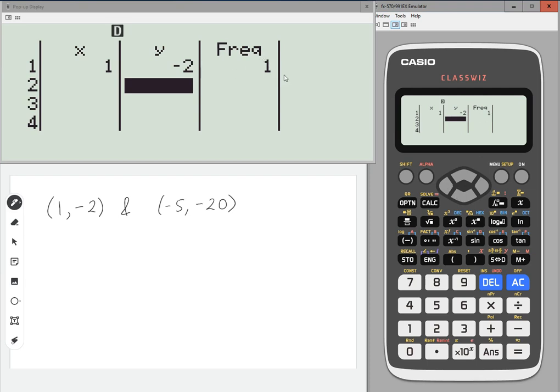You'll see frequency is automatically populated with one. That can be ignored. That's just saying that you've got one of these coordinates. Then we've got minus five, minus 20.